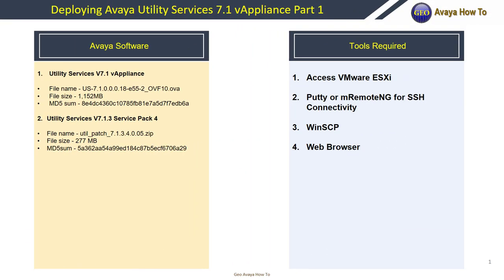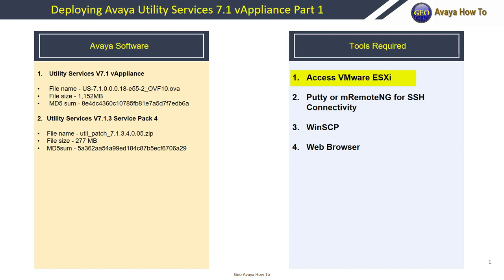The software required for this implementation is Utility Services 7.1 vAppliance and Utility Services Feature Pack 3 Service Pack 4. The tools we're going to use today are access to VMware, Putty or MRemote-NG, WinSCP, and a web browser.